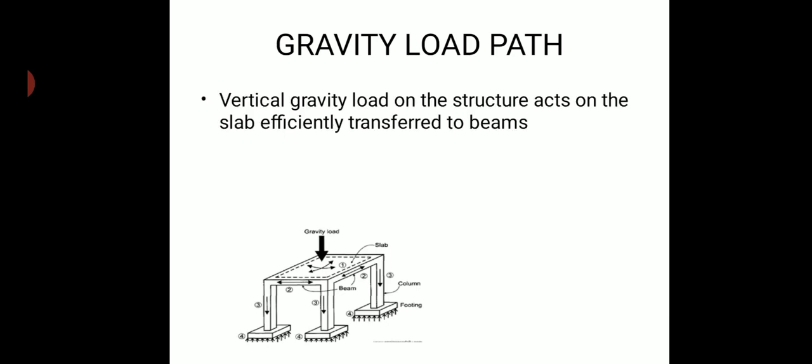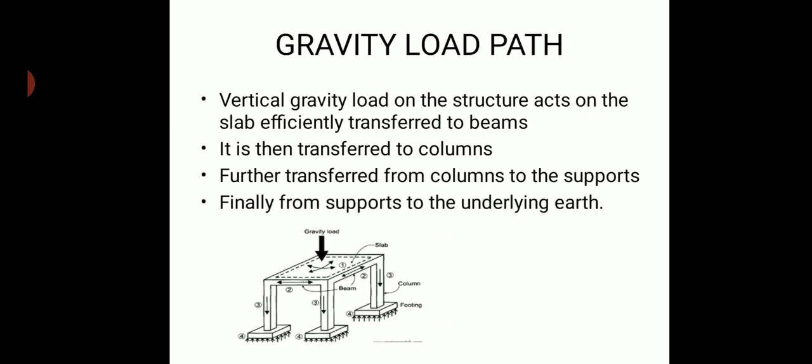Coming on to the first type of load path — the gravity load path. Gravity load path is the type of load path in which the vertical load, inclusive of dead load of the structure and live load on the structure, collectively acts on a slab and is effectively transferred to the beams. From the beams it is transferred to columns, and from the supports it is transferred to the underlying earth, as neatly represented in the sketch below.